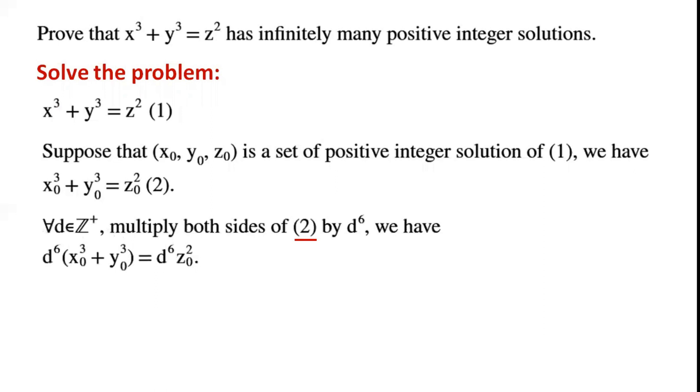For all d in the set of positive integers, multiply both sides of equation 2 by d to the power of 6. We have d⁶ times x₀³ plus y₀³ equals d⁶ times z₀ squared. By rearranging the equation,